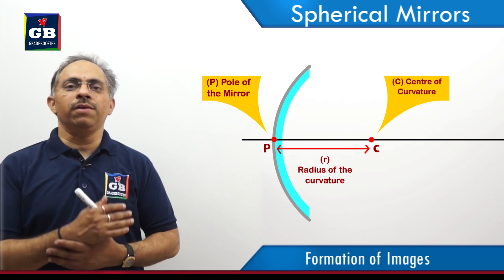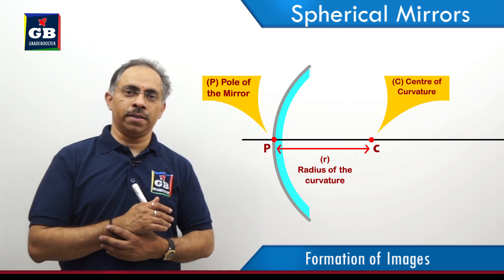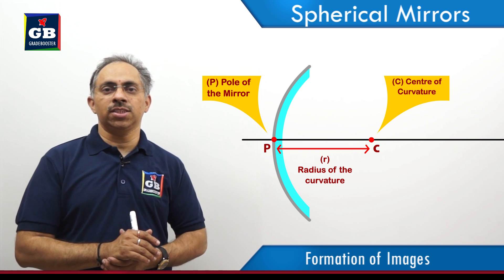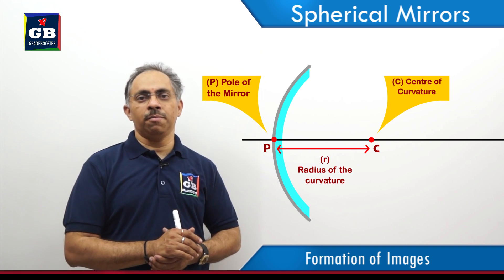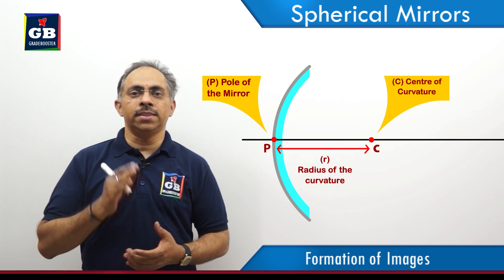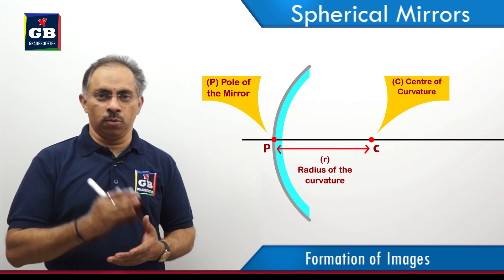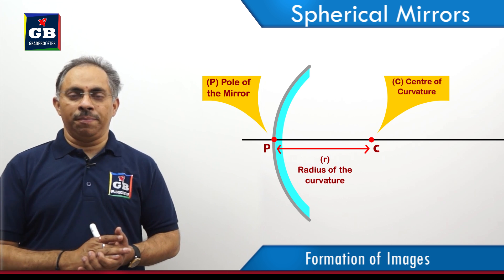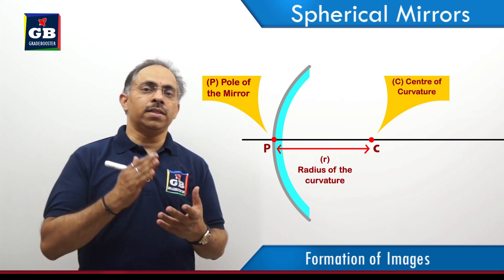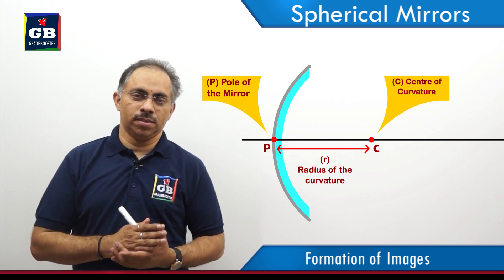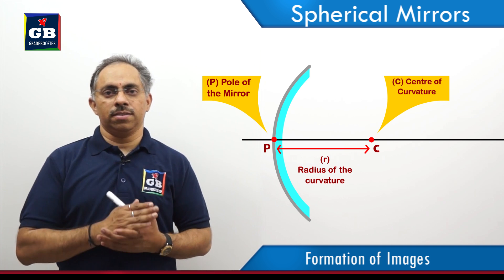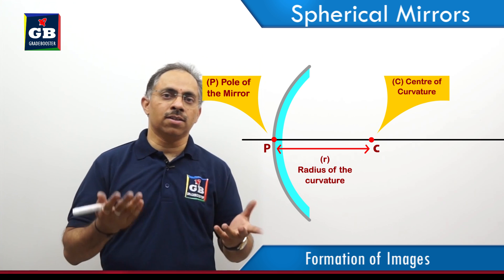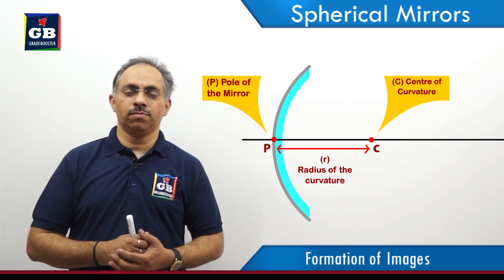Before going for the construction of images formed by spherical mirrors — which will also help us understand the nature and size of the images formed — we need to understand what rules are to be followed in doing such an activity. That means, what are the rays to be considered to construct an image in the case of a spherical mirror, either concave or convex.